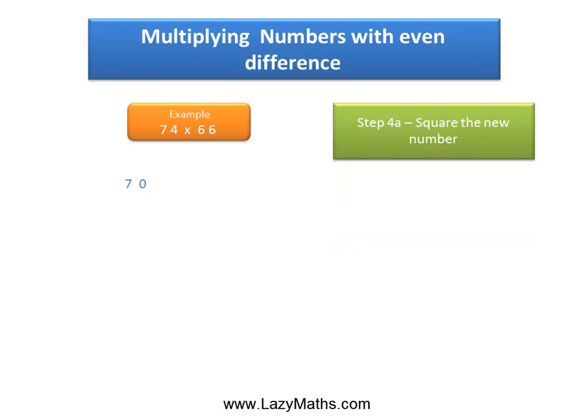The next step involves squaring this number 70. Square of 70 is easy: square of 7 is 49, so square of 70 is 4900.